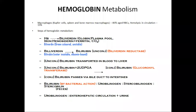Hemoglobin metabolism — the fate of the RBCs: after 120 days, the RBC membrane becomes fragile. They are taken up by the reticuloendothelial system, which consists of monocytes and mobile-fixed macrophages. Macrophages are present in the liver, spleen, and bone marrow. Those located in the liver are called Kupffer cells. 85% of the RBCs are removed by the reticuloendothelial system, and the remaining 15% of hemolysis occurs in circulation.